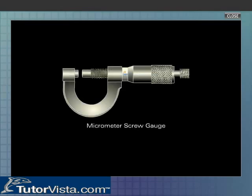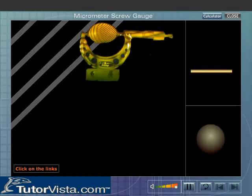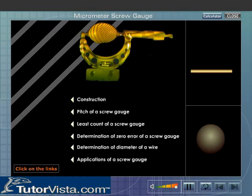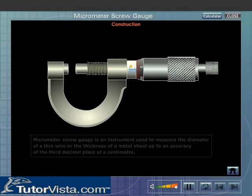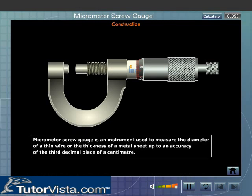Micrometer Screw Gauge. Click on the links provided. Construction. Micrometer Screw Gauge is an instrument used to measure the diameter of a thin wire or the thickness of a metal sheet up to an accuracy of the third decimal place of a centimeter.